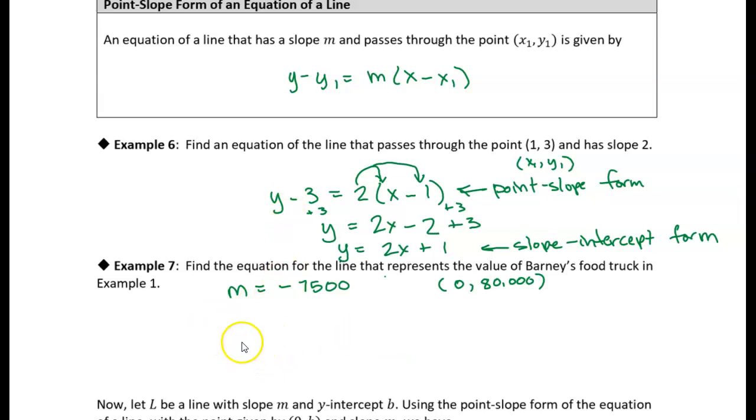And then, instead of Y, because it represents value, I can just call it V instead if I want to. So V minus the fixed point, the fixed Y value, that's $80,000. So V minus $80,000 is equal to the slope, negative $7,500 times X. And in this case, our horizontal axis was the time, so really I could just use T instead of X. Sometimes it's helpful to use descriptive letters rather than this plain old X and Y. T for time, V for value, that makes sense. And then the time coordinate of this point is just zero, so it's just minus zero.